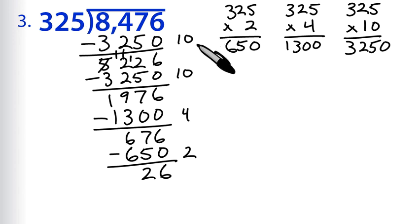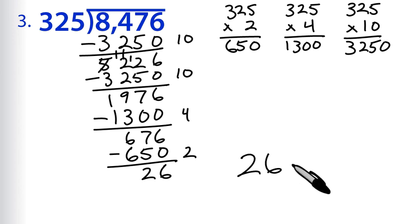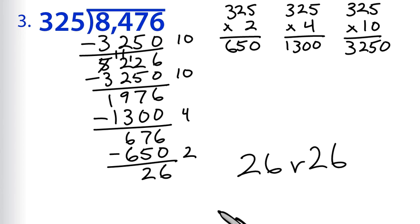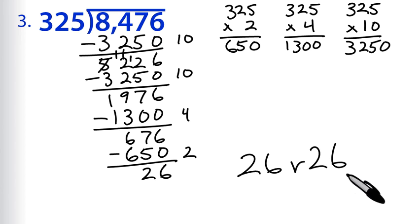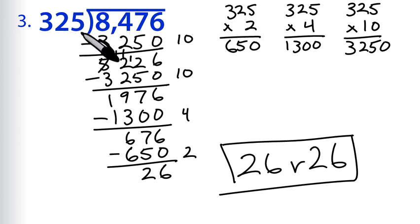Let's add this up: 10 plus 10 is 20, plus 4 plus 2 is 26, with a remainder of 26. That looks unusual, but that's just the sort of thing that can happen — 26 with a remainder of 26 is what you get when you divide 8,476 by 325.